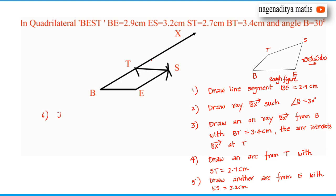Sixth step: Join T to S and E to S. Seventh step: BEST is the required quadrilateral.